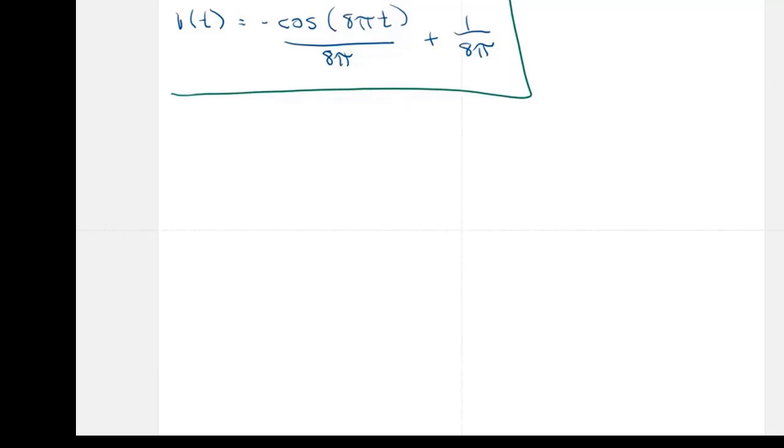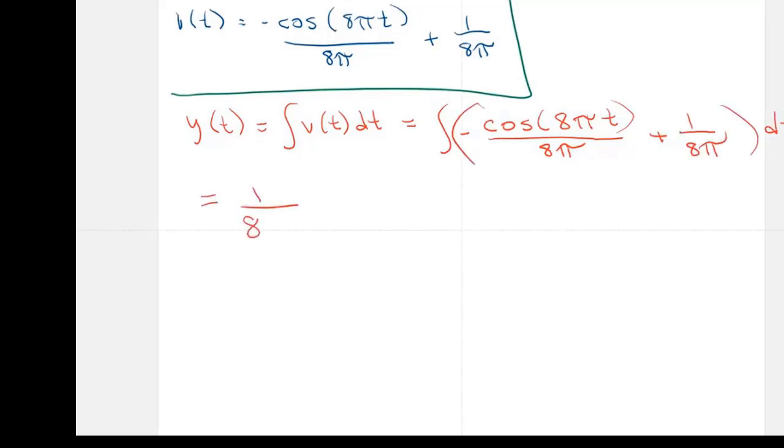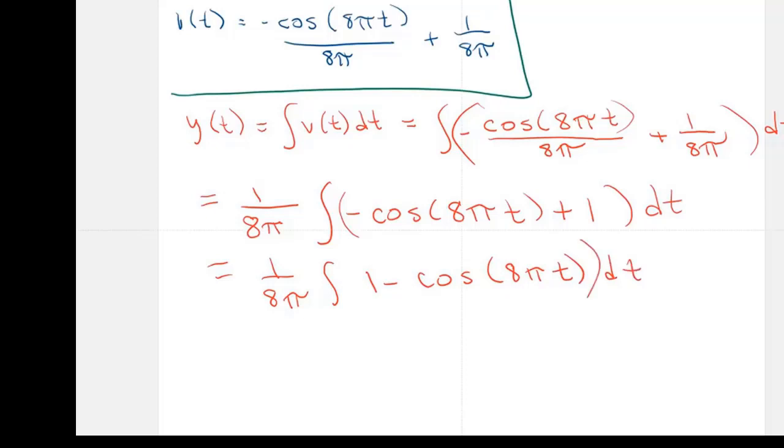But now if I want to find Y of T, it's equal to the integral of V of T, dt. Which is equal to the integral of the negative cosine of 8π T over 8π plus 1 over 8π. I'm factoring out that 1 over 8π. And then I just get negative cosine of 8π T plus 1 dt. Or I could even say that this is equal to 1 over 8π times the integral of 1 minus cosine of 8π T, dt.